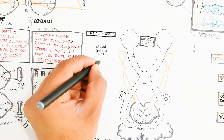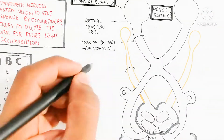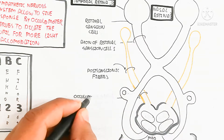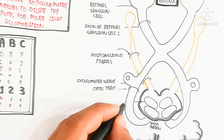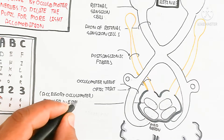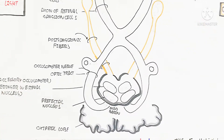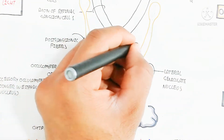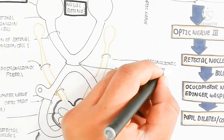The retina is important for light absorption and image formation. Here are the retinal ganglion cells and their axons. These are the postganglionic fibers coming from the oculomotor nerves. The oculomotor nerve arises from the oculomotor nucleus as well as the Edinger-Westphal nucleus. The accessory oculomotor nerve is also part of the Edinger-Westphal nucleus. The afferent nerve is the optic nerve — cranial nerve 2 — and the efferent is cranial nerve 3. Here is the optic chiasm.